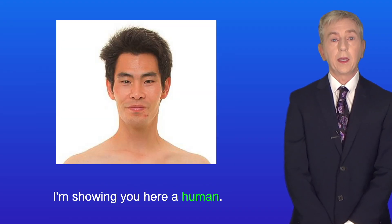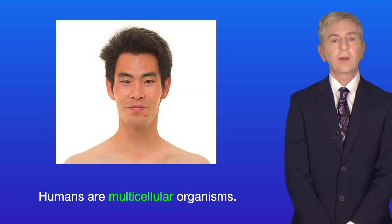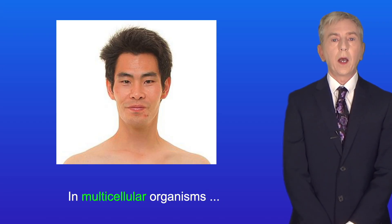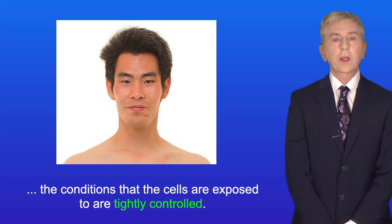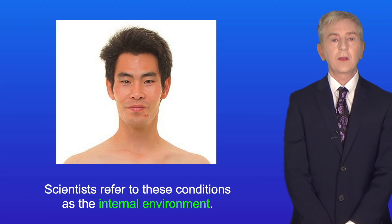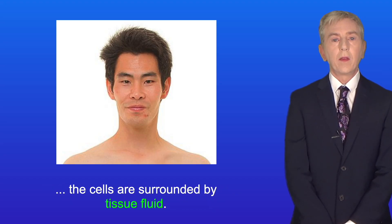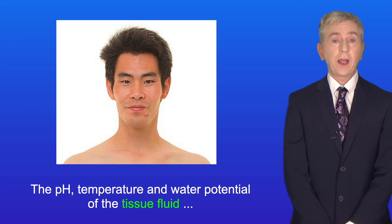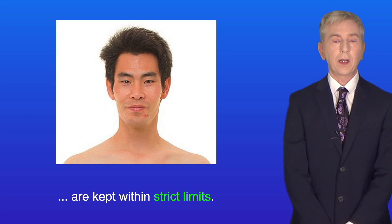I'm showing you here a human, and humans are multicellular organisms. Now in multicellular organisms, the conditions that the cells are exposed to are tightly controlled. Scientists refer to these conditions as the internal environment. For example, in the case of mammals such as humans, the cells are surrounded by tissue fluid, and the pH, temperature, and water potential of the tissue fluid are kept within strict limits.